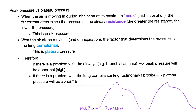Peak pressure versus plateau pressure. Peak pressure occurs when air is moving in during inhalation at its maximum — usually reached mid-inspiration. Then the pressure plateaus. On the pressure curve: from the baseline to the peak is the peak pressure; the flat portion afterward is the plateau pressure. What determines peak pressure? Airway resistance. A change in peak pressure means a change in airway resistance. What determines plateau pressure? Lung compliance. If plateau pressure increases, lung compliance is deteriorating.